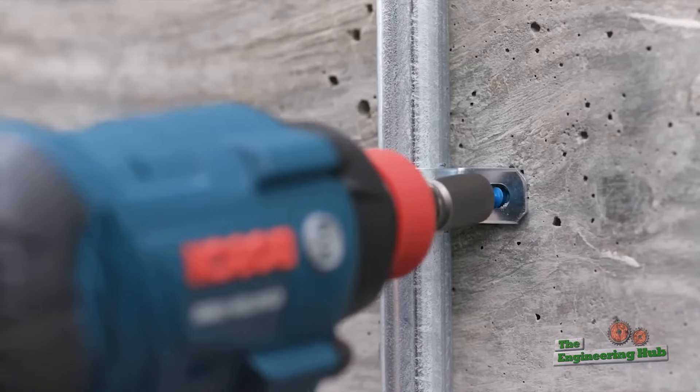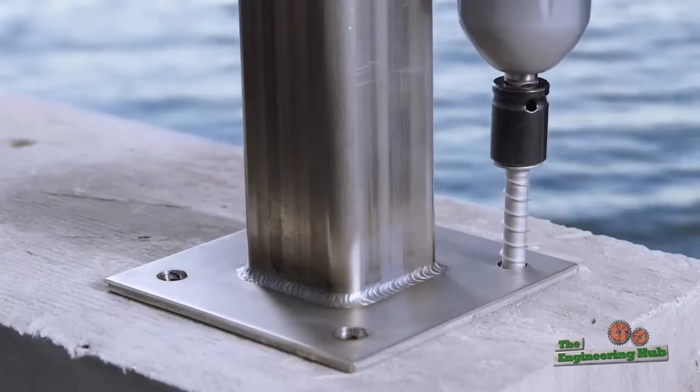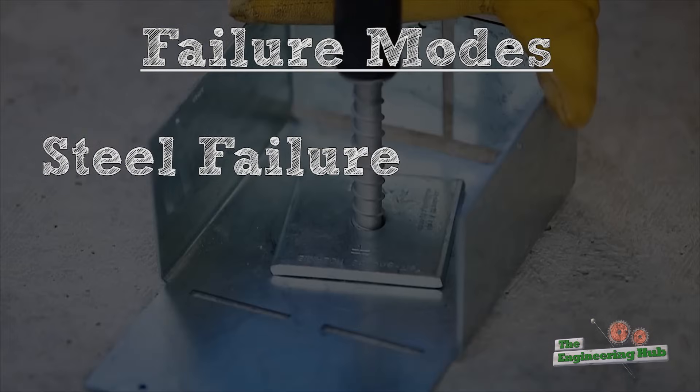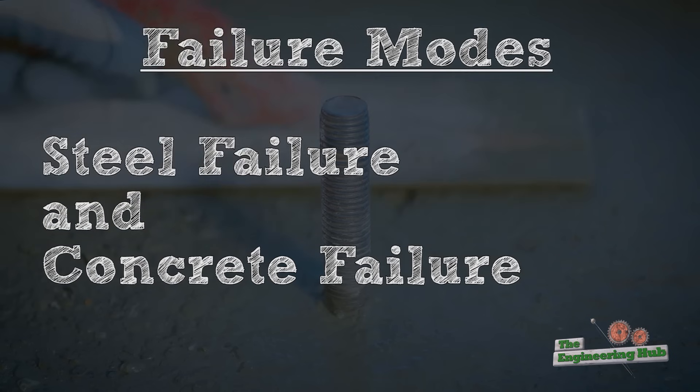Depending on the type of concrete anchor and complexity of anchor groups, there can sometimes be a dozen or more failure modes for one connection. Failures can generally be categorized between steel failures and concrete failures.